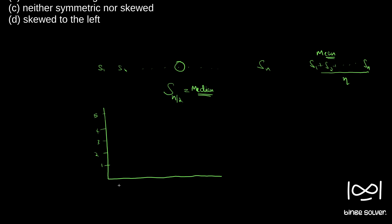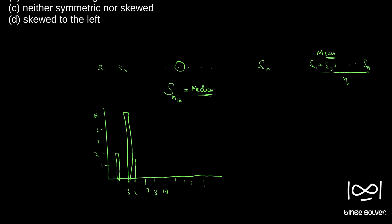For simplicity, we arrange the numbers in increasing order. Say we have numbers 1, 3, 5, 7, 8, 10, and we look at how many times each appears. For example, one appears two times and three appears five times.